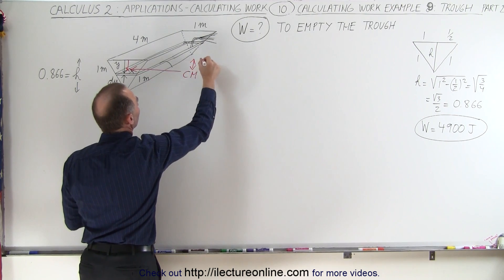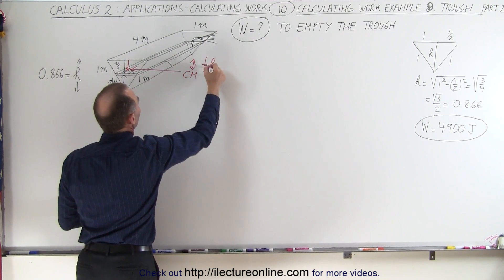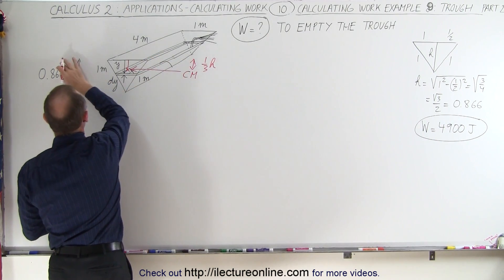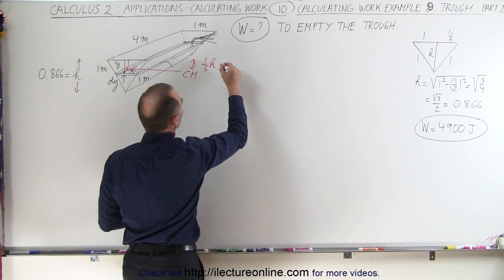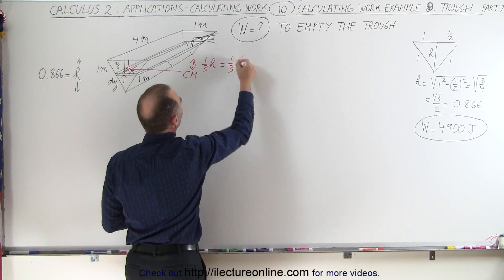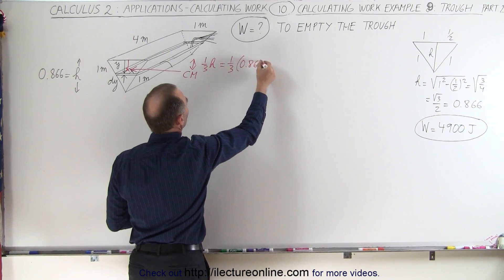And it will be one-third the distance from the top to the bottom, which is the height, which is 0.866, so this will be one-third times 0.866.